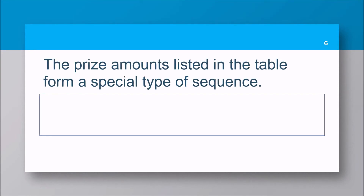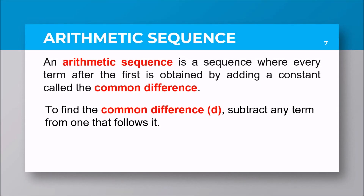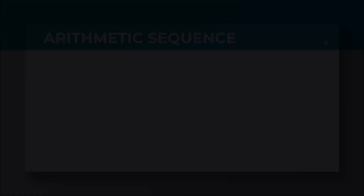The price amounts listed in the table form a special type of sequence: 150, 250, 350, 450, 550, 650, and so on is an example of an arithmetic sequence. An arithmetic sequence is a sequence where every term after the first is obtained by adding a constant called the common difference.